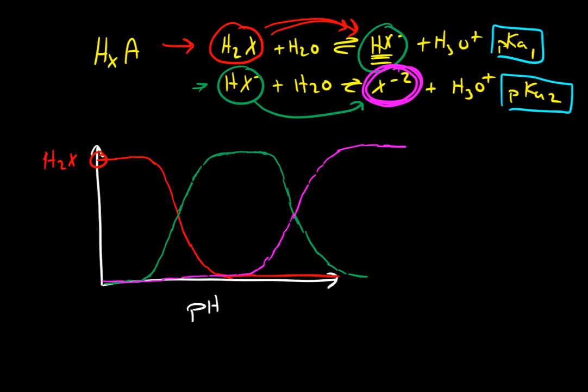But to be able to do this well, we need to be able to label this with the relevant information. And in this case, the relevant information is going to be pKa1 and pKa2. So just like we saw in the first speciation video, we established that when the concentration of weak acid equals the concentration of weak base, that's where pH equals pKa.